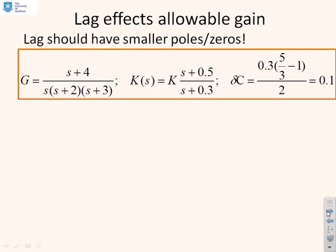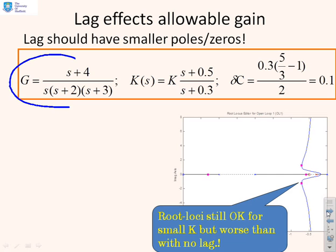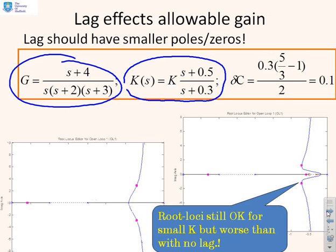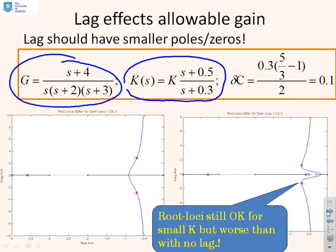OK, so what we've done now is we've used the same example as before. This was example one. But you'll see we've introduced a lag with much smaller poles and zeros. And what difference do you notice here? In this case, the centroid has only been shifted by 0.1. And so now, if I look at this bit of the root loci and this bit of the root loci, which is the bits that are going to give you damping.